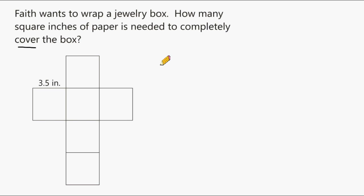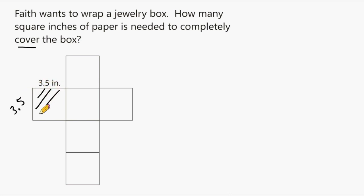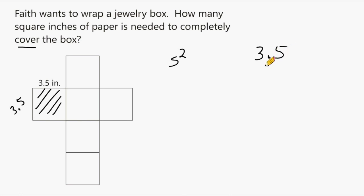They took its three-dimensional form and unfolded it into its two-dimensional form. Now let's take a look at this individual square right here. We can see that its width is 3.5, which means its length is also 3.5. So to find the area of this individual surface, all we have to do is take that individual side and raise it to the second power, or multiply it by itself. So let's go ahead and multiply 3.5 by itself.